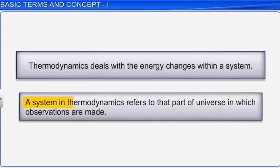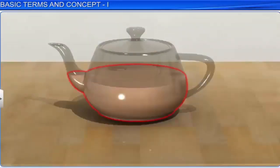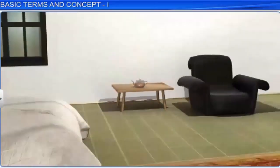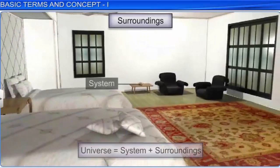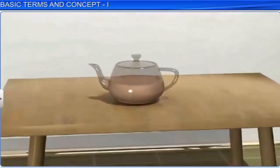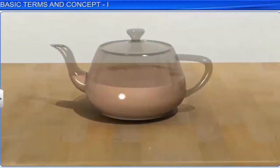A system in thermodynamics refers to that part of the universe in which observations are made. The part of the universe that is not part of the system, but can interact with it, is called the surrounding. Systems and surroundings together constitute the universe. The part that separates a system from its surrounding is known as the boundary. In this case, the wall of the teapot is the boundary.